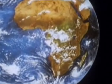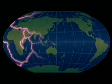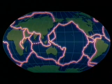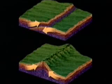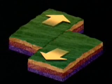A number of great plates compose the fractured surface of the earth. Slowly oozing molten rock far below moves the plates over, under, against, and past each other.